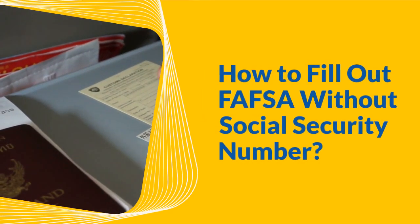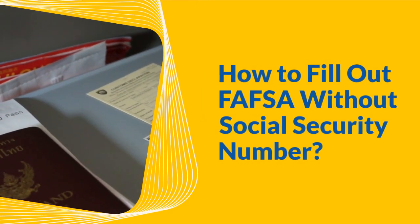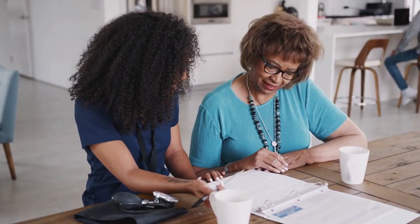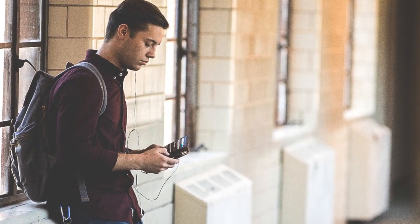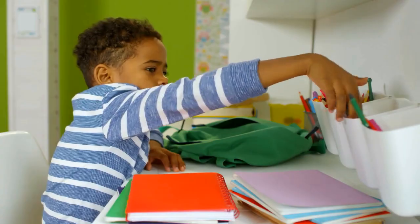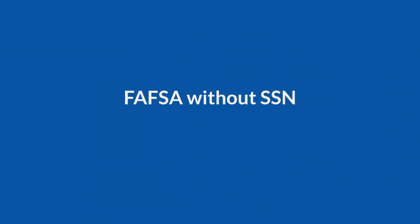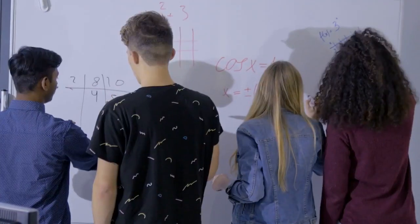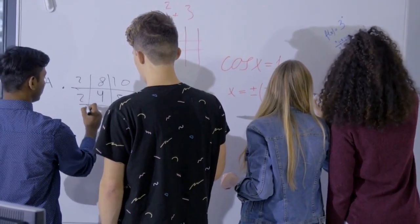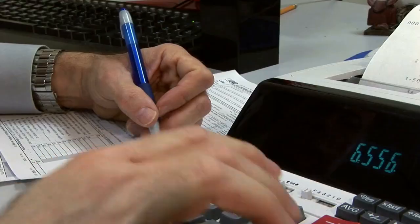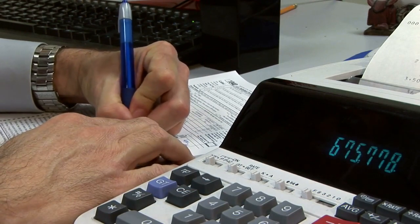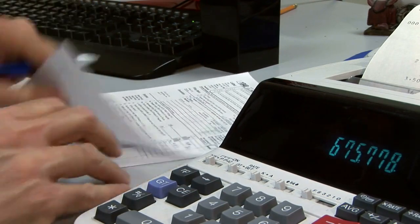Welcome back to our channel. Today we're diving into an important topic for students in the United States, especially those who come from different parts of the world. We're talking about filling out the FAFSA without a social security number. So why is having a social security number important for the FAFSA? It's because the FAFSA and FSA IDs require it for processing. But don't worry — if you're not a U.S. citizen or don't have a social security number, there are still options available.